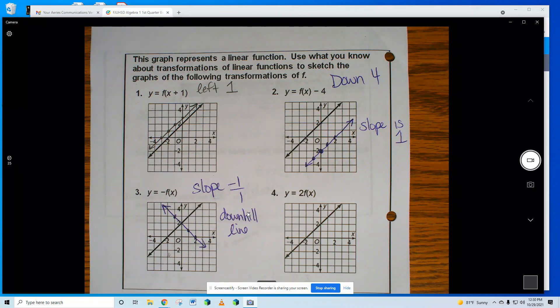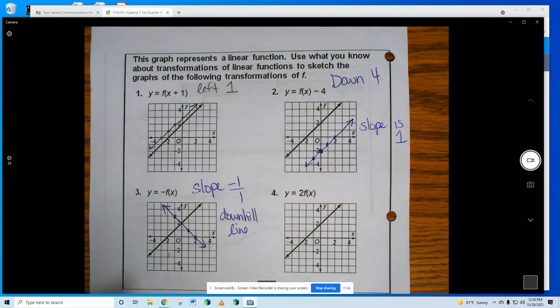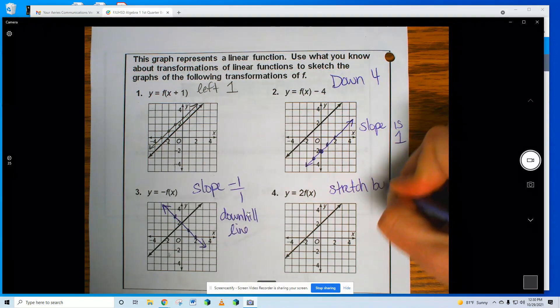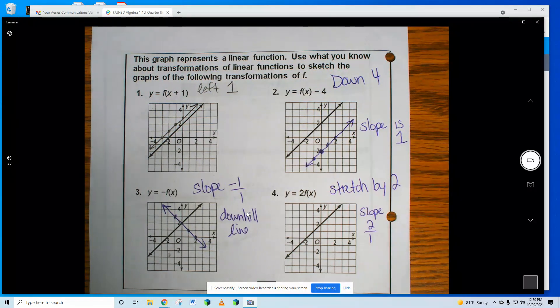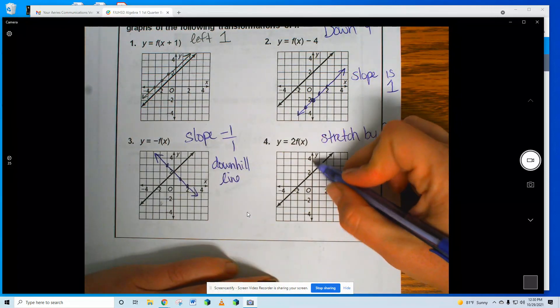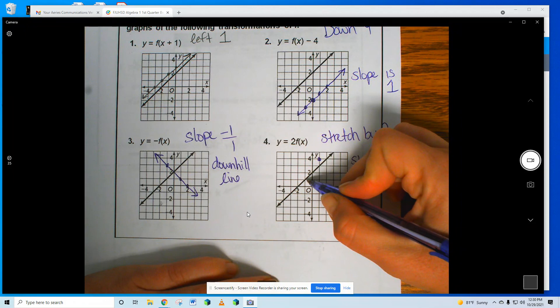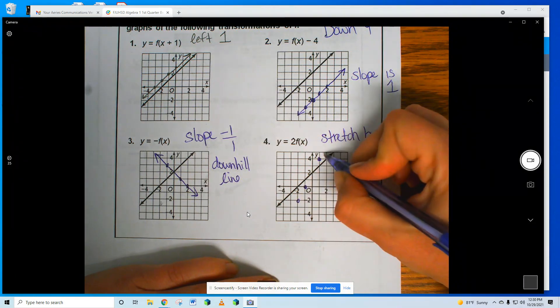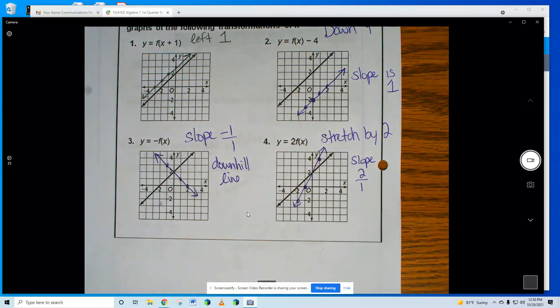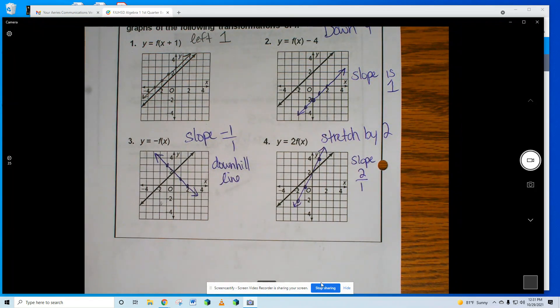Okay, last one. What is it? What's the 2? I'm doubling, I'm putting a 2 in front of the whole function. Stretch. Stretch by 2. What's the slope? The slope is 2 over 1. So I'll, you know, do my whole y-intercept thing. Up 2 over 1, down 2, left 1. It's just getting closer to the y-axis. Very good job. Yeah, you.